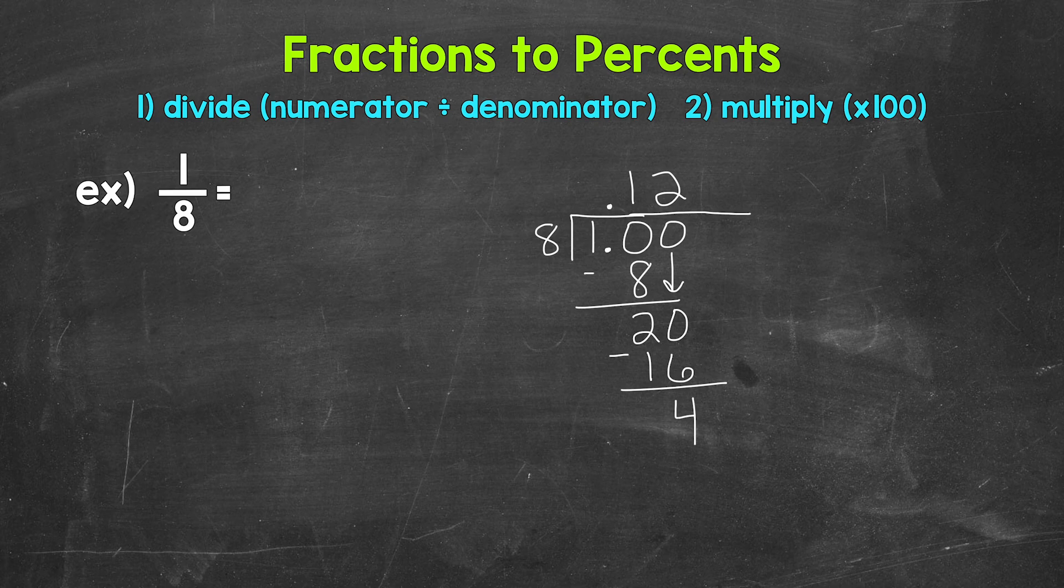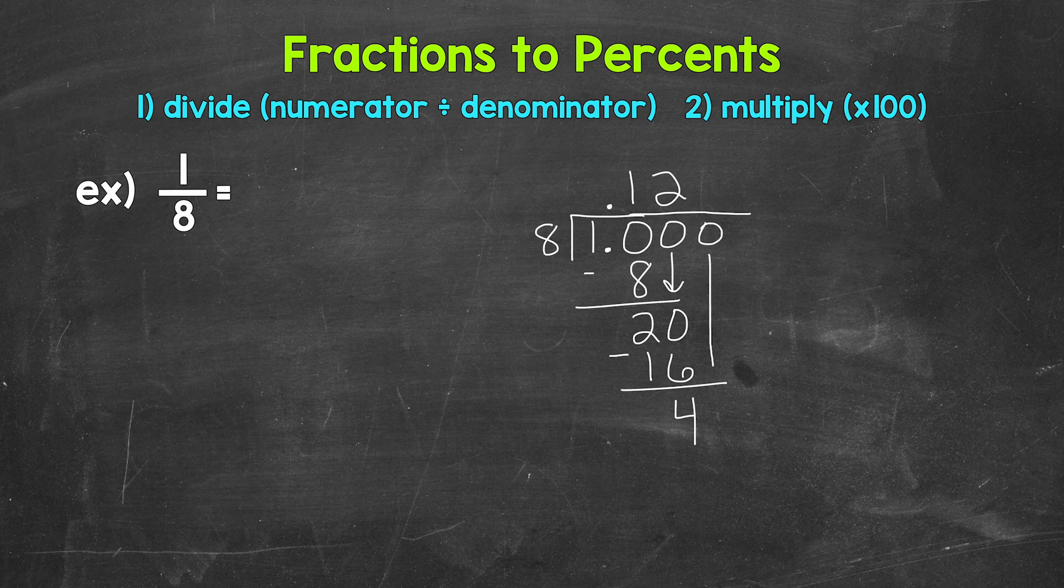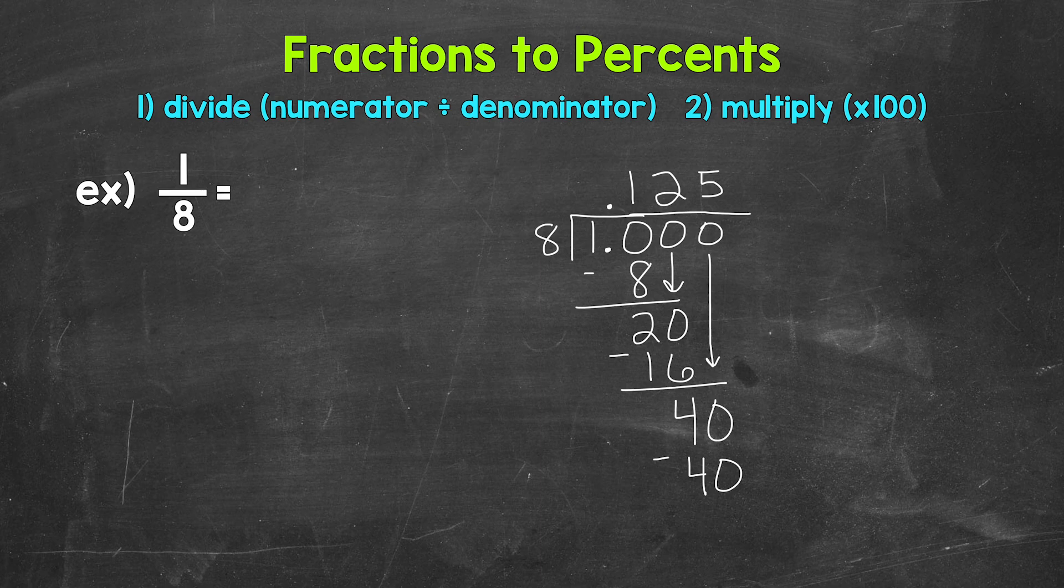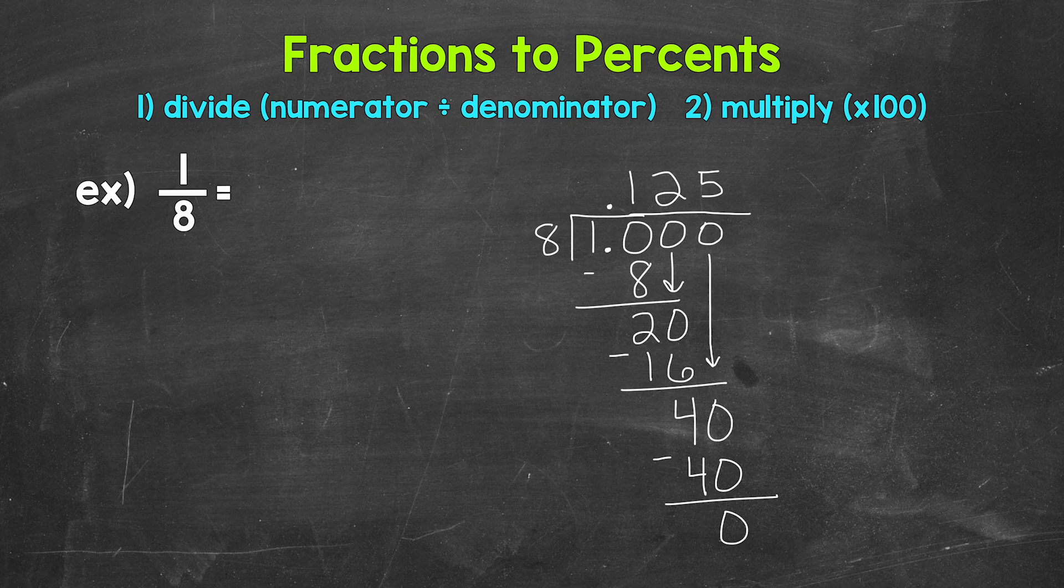So we don't have that clean cut zero yet there at the bottom. Let's use another zero in order to continue on that we can bring down. Now we have 40. So 40 divided by 8. That gives us 5. So we put 5 up here. Multiply. 5 times 8 is 40. Subtract. 40 minus 40 is 0. So now we have that clean cut zero there at the bottom. And nothing else to bring down within our problem. So we are done.